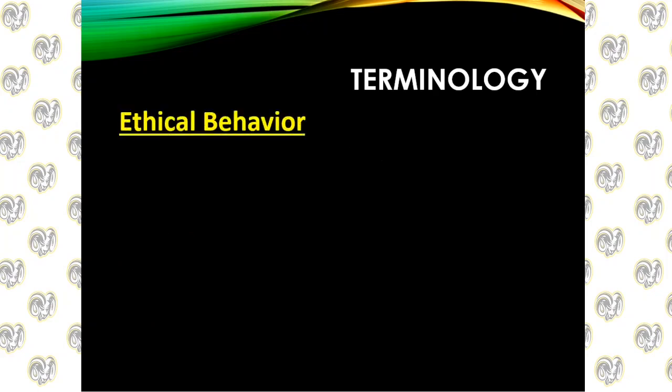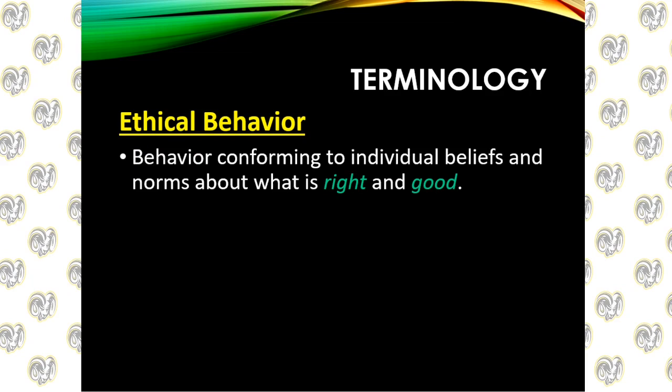Ethical behavior is how you act — behavior conforming to your beliefs about what is right and good. If you believe that breaking the law is wrong, your ethical behavior will back that up. You're not going to say breaking the law is wrong and then turn around, get in your car, and break the law by speeding.